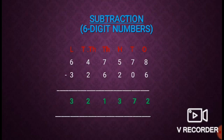8 minus 6 is 2. Tens place: 7 minus 0 is 7. Hundreds place: 5 minus 2 is 3. Thousands place: 7 minus 6 is 1. Ten thousands place: 4 minus 2 is 2. Lakhs place: 6 minus 3 is 3. So, the difference is 3,21,372.